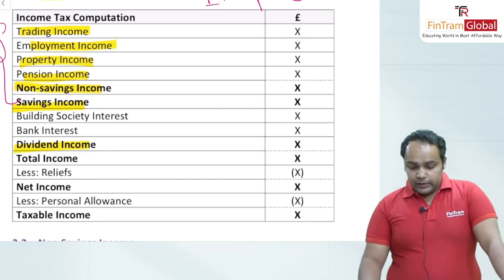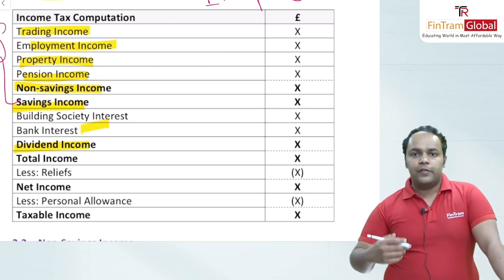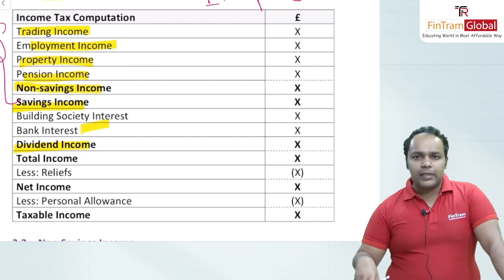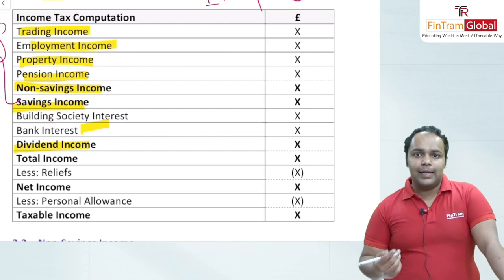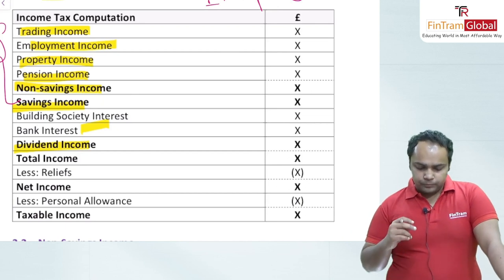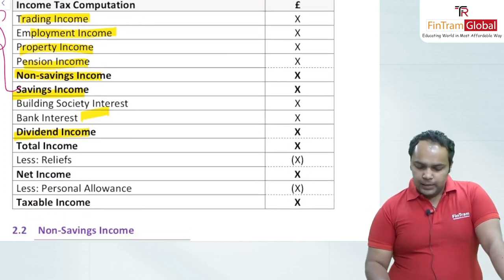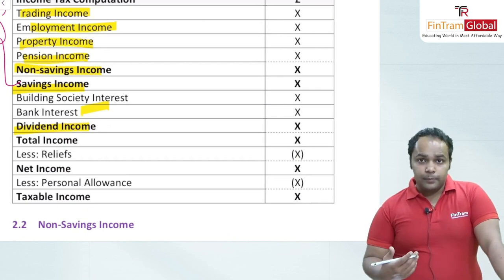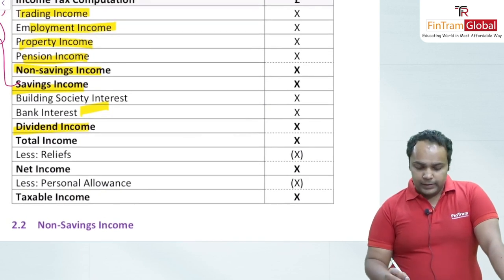For savings income, there are two kinds: bank interest — essentially interest received on fixed deposits or other bank investments — and building societies, which pool funds from investors and invest in real estate assets, with income sent back to investors. Dividend income is income received as dividends from UK companies and is taxed under the dividend income head.